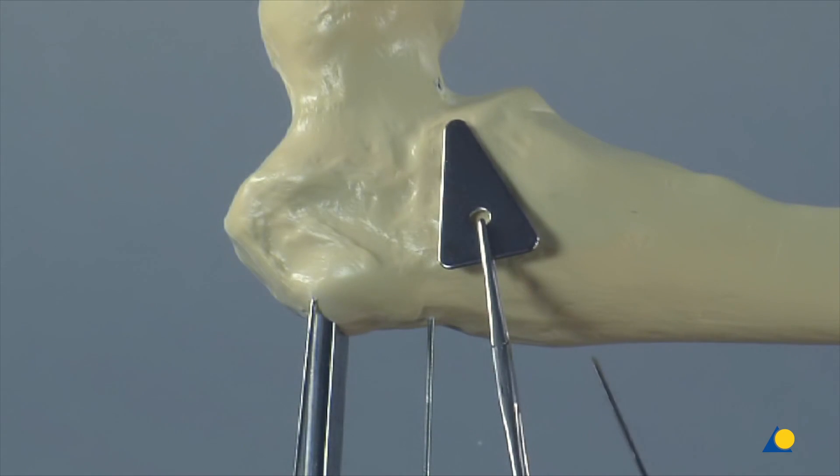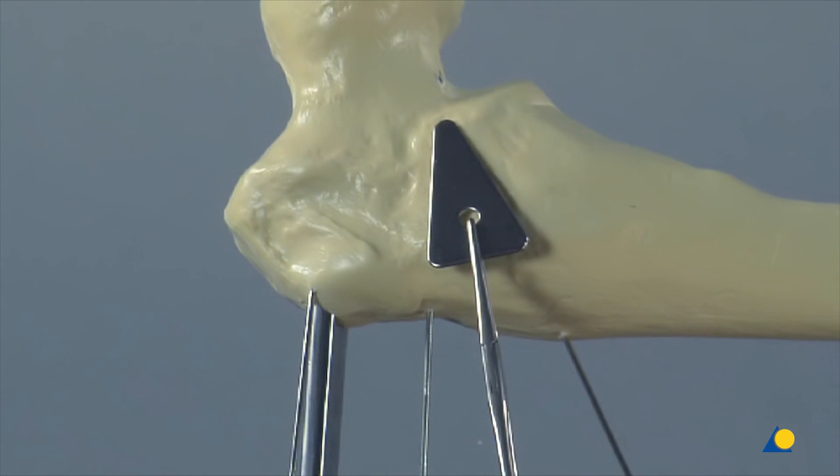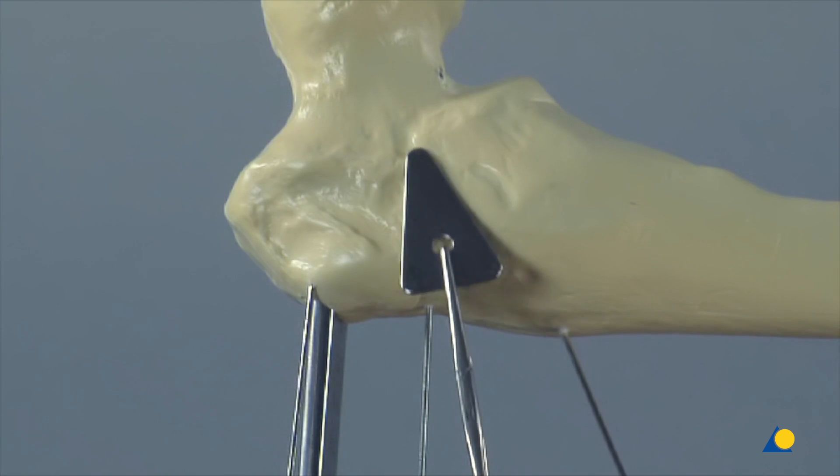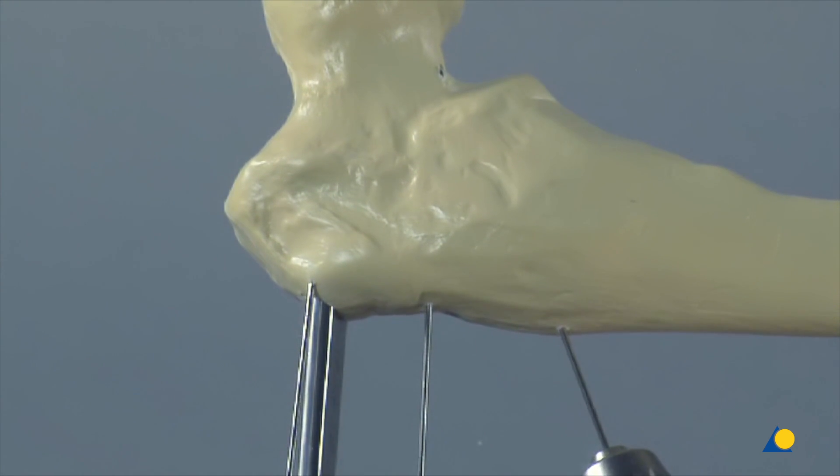Another K-wire is inserted from distal towards the medial cortex using the triangular positioning plate to help align it to the 30 degree angle of correction relative to the previously inserted K-wire in the AP plane.